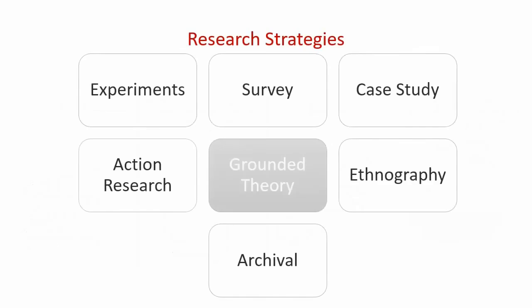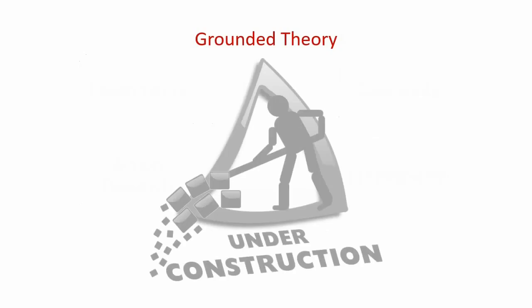Now let's look at strategy number five: grounded theory. Think of grounded theory as a theory-building strategy where the focus is on building theories around people's behavior. This strategy is especially useful when existing theory on the behavior is sparse — for instance, understanding how people get addicted to social media at a time when studies on social media addiction don't really exist.